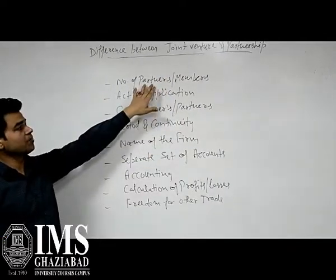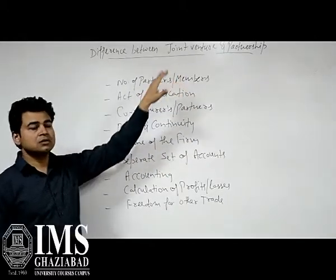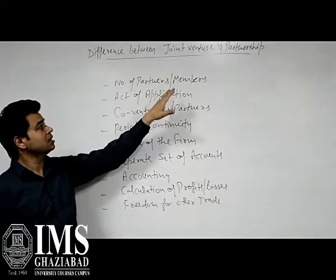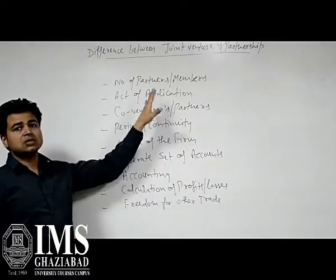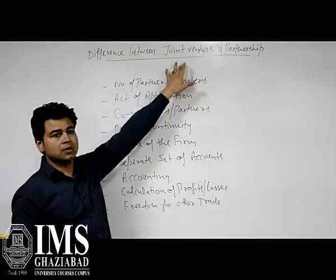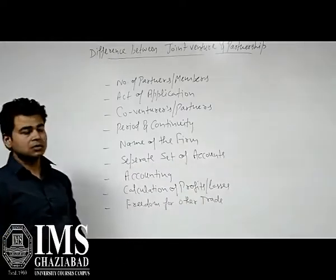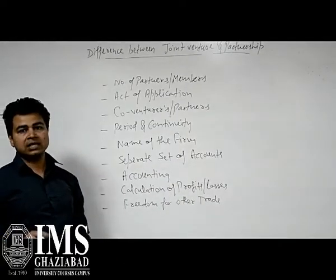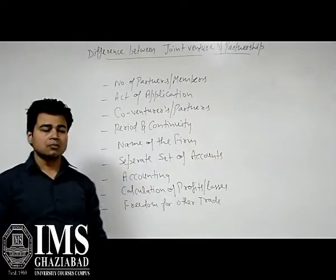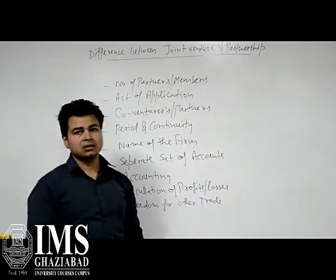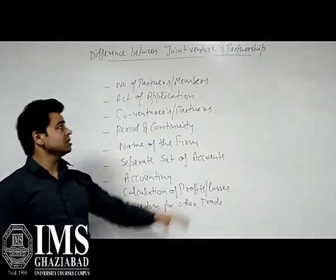The first point is number of partners or members. In the context of joint venture, the minimum number is 2 and there is no maximum limit. But in partnership, the minimum is also 2 and the maximum is 20 members in ordinary business. In the context of banking, this number is restricted to 10 members.